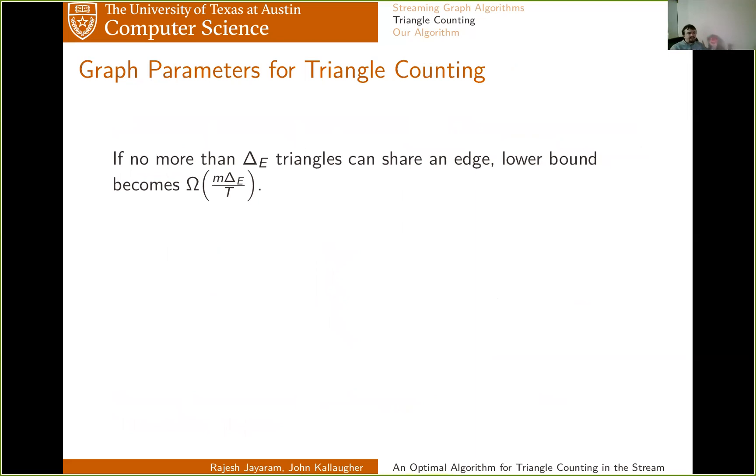And it turns out that if you say, okay, there can be no more than delta E triangles sharing any given edge, then this lower bound goes from being omega of M to being omega of M times delta E over T. And there's a series of algorithms that use this extra parameter to achieve sublinear space. In particular, the culmination of the work on that with this specific parameter is this algorithm of Pagh-Tsourakakis that gives you M over square root T plus M delta E over T space, which actually, up to a log factor, can be proved to be optimal.